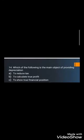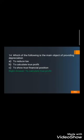Question number fourteen: Which of the following is the main objective of providing depreciation? A) To reduce tax, B) To calculate true profit, or C) To show the true financial position. The correct answer is B) To calculate the true profit. The company must deduct all expenses incurred during the year, and depreciation is one such expense. Deducting it ensures that the profit shown is accurate.